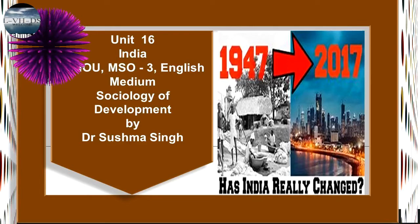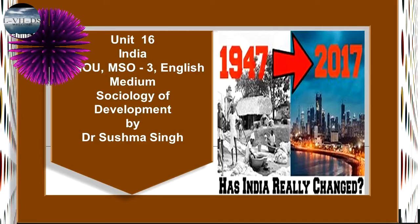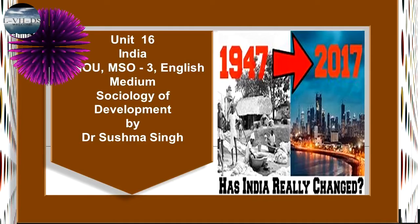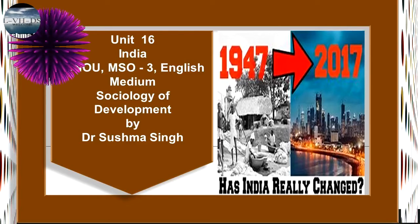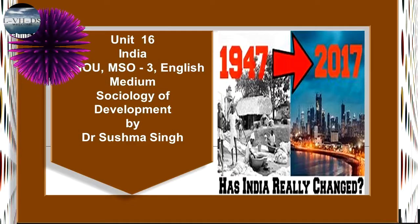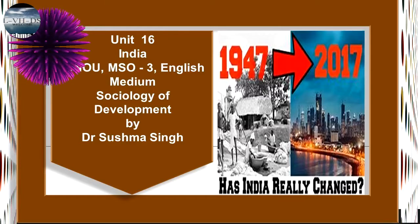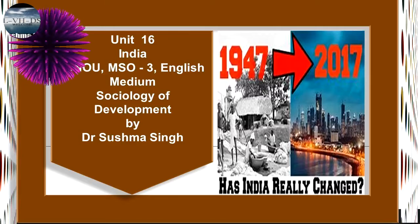The development strategy of economic growth through modern industrialization was continued into the third plan, 1961–1966. The immediate objectives of the third plan, which was aimed at self-sufficiency, were: to secure an increase in national income of over 5% per annum and ensure a pattern of investment which could sustain this rate of growth during subsequent plan periods; to achieve self-sufficiency in food grains and increase agricultural production to meet the requirements of industry and export; and to expand basic industries like steel, chemicals, fuel, and power, and to establish machine-building capacity, so that the requirements of further industrialization could be met within a period of 10 years or so, mainly from the country's own resources.